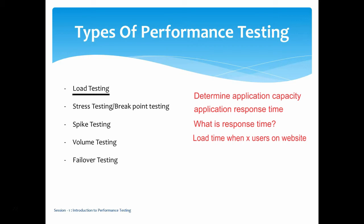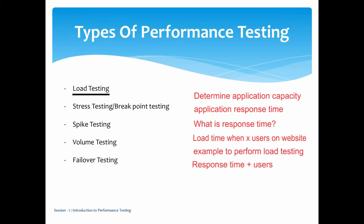In load testing, we give a fixed number of users to determine how quickly all the application pages are loading for that particular number of users. For example, with a shopping cart like amazon.com — if you are the owner of amazon.com — you ask a performance tester to test what is the response time for, say, a thousand users. We give a thousand users to amazon.com and see how quickly it loads for all those users. The goal is to measure response time with a fixed number of users.